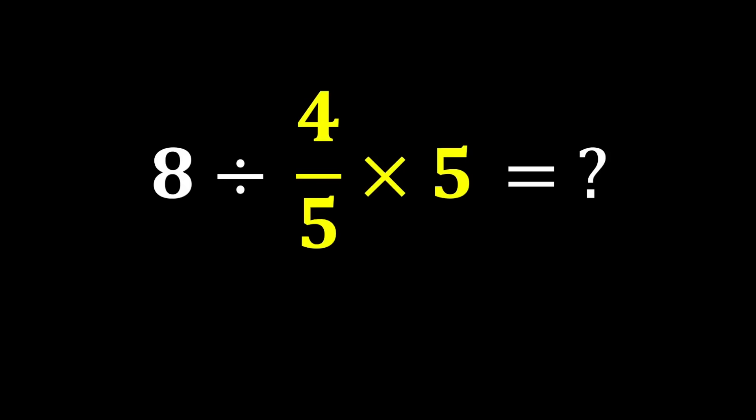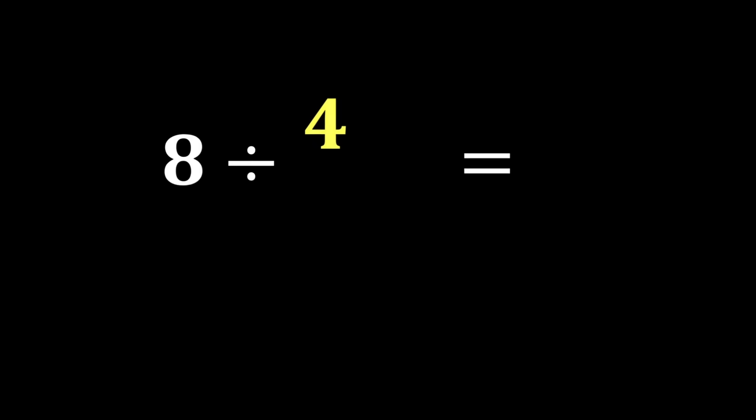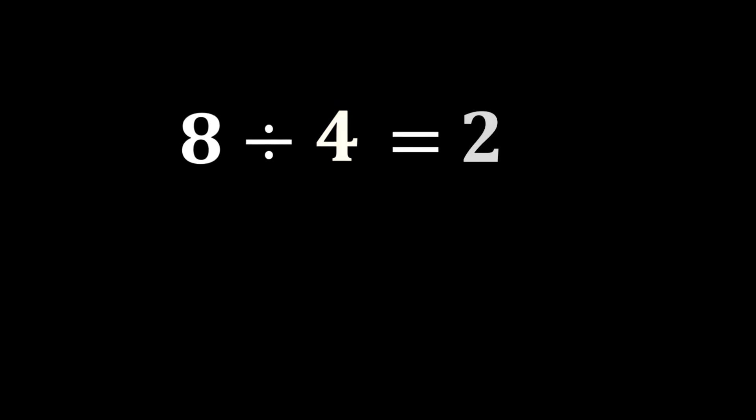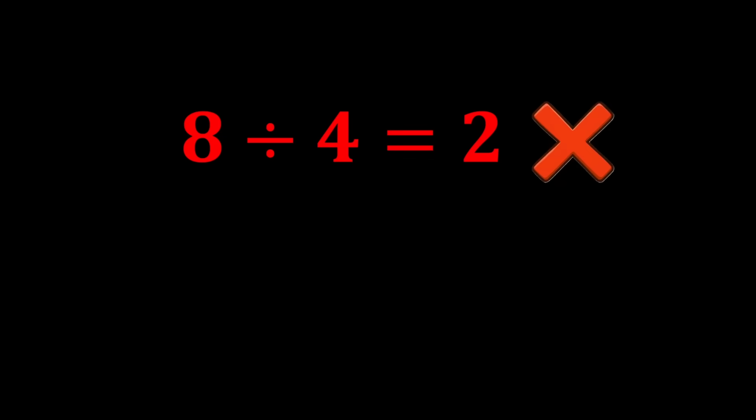First, we do this multiplication: 4 over 5 times 5. The 5's cancel with each other and only 4 remains. In the end, 8 divided by 4 gives us 2. But this answer is not correct because we did not follow one of the most important rules of mathematics.